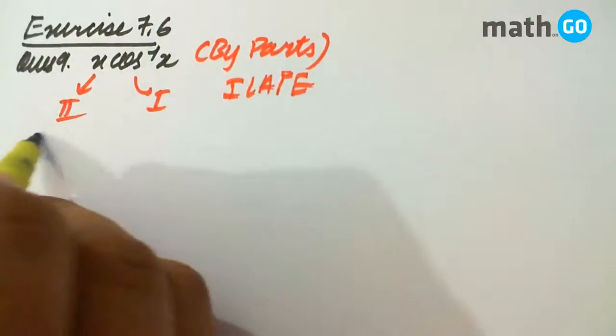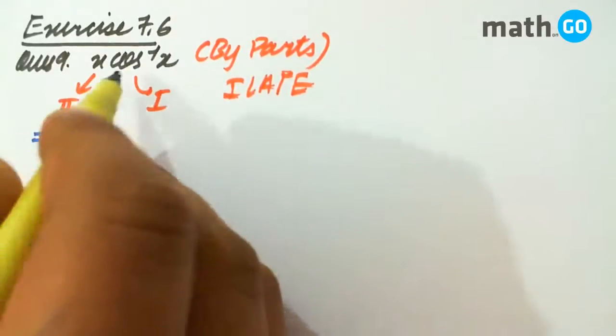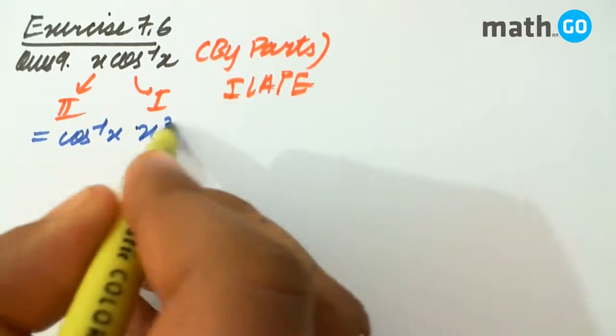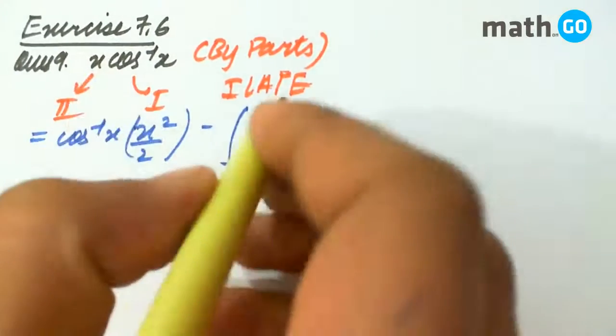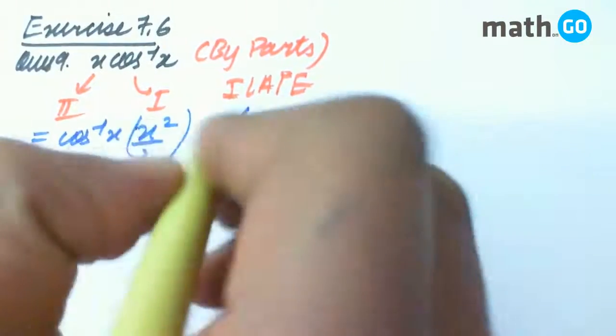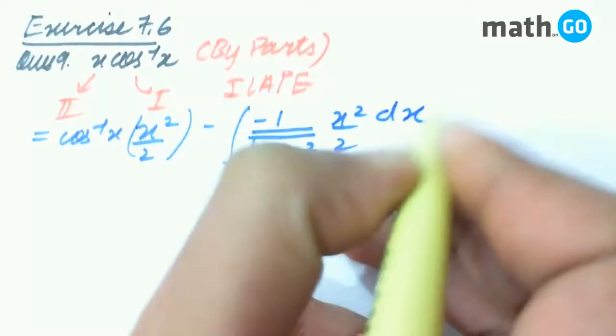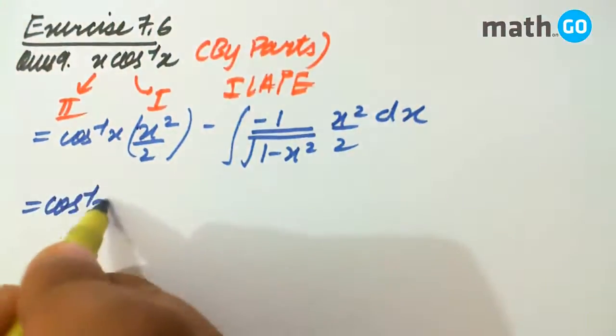So, proceeding as the formula, we have this, we kept constant, iska integral minus iska derivative, that is nothing but minus 1 by 1 minus x square root into iska integral, that is x square by 2 ka dx. This is simply formula application.